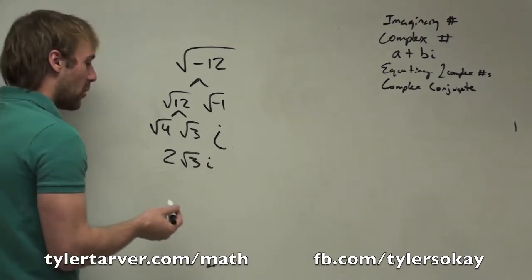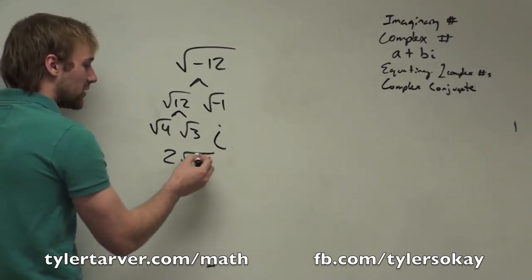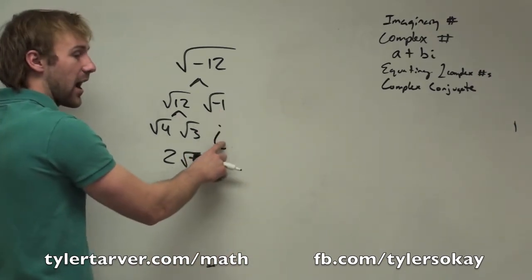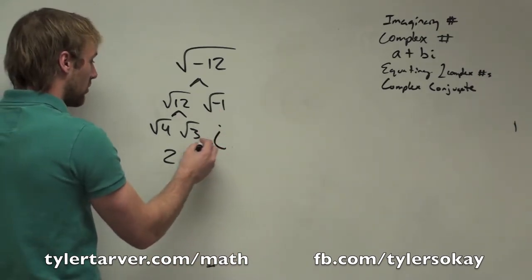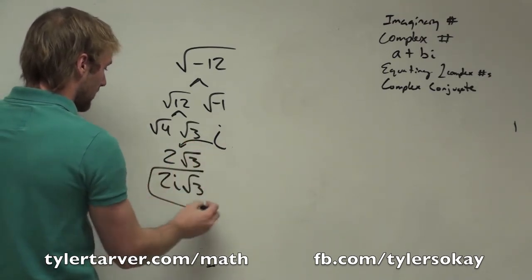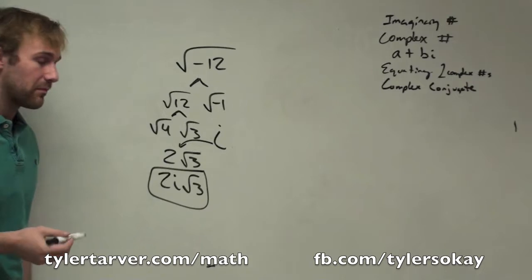And then we're going to put the i. We could put the i there, but we don't want to confuse it and people think that's under the radical. No. We want people to know that we've turned this into an i. Therefore, there's no radical. So we'll move it right here. So 2i radical 3, and you're done.